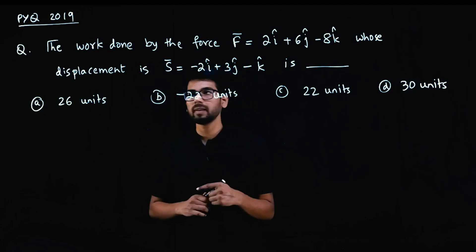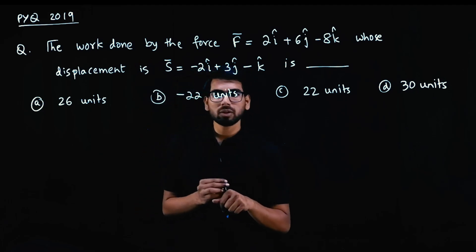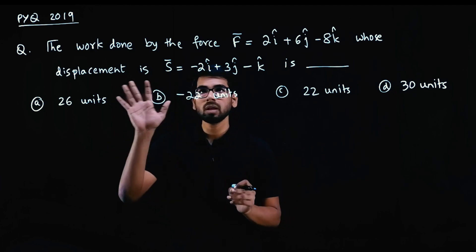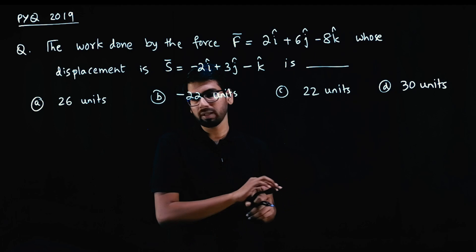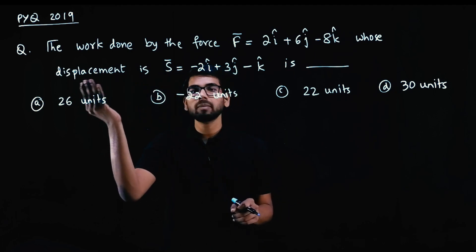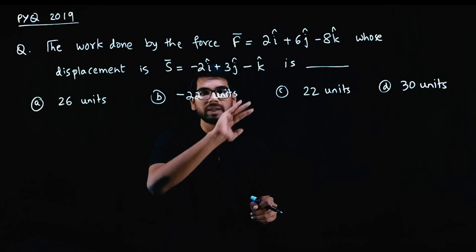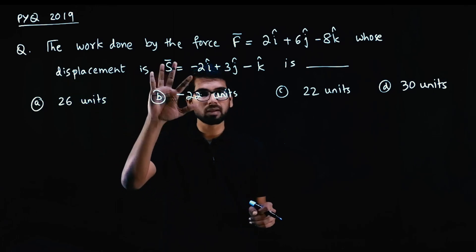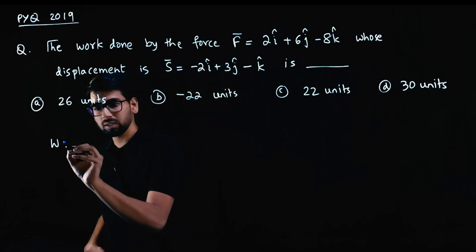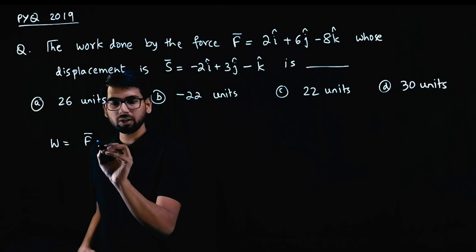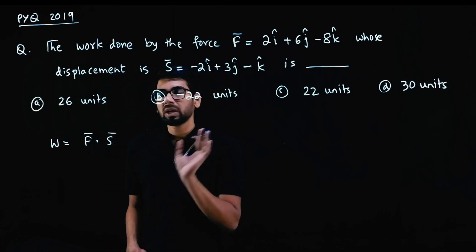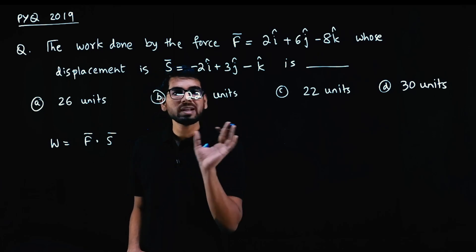Next question on vectors, also from 2019. This is a common question about work done. Work done by the force in moving through a displacement — what is the formula? Work done W = F̄ · S̄. Again, this is a simple dot product question: dot product between force and displacement.